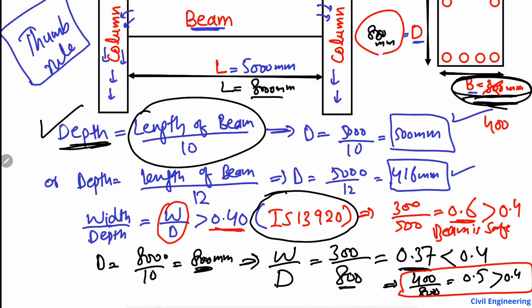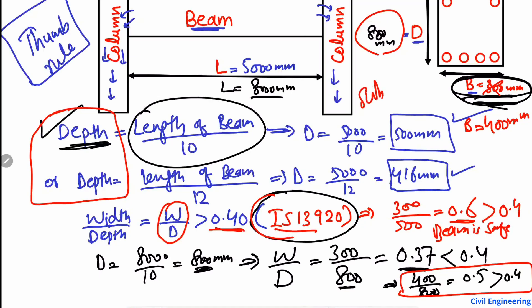So this is how we can find the depth of a beam in a simple way using the thumb rule. While it is not a fixed design rule, this method allows us to start our reinforcement design for the main reinforcement of the beam. This is the thumb rule for determining depth along with the general specification provided by the Indian Standard. Thank you for watching, and don't forget to subscribe to the channel.